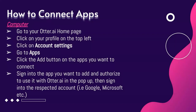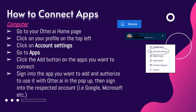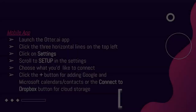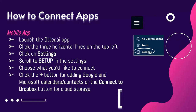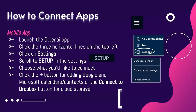So how do you connect? Go to the Otter AI homepage, then click on your profile in the top left. By clicking on account settings, you would press the add button to the apps you want to connect. You can sign into the app and authorize it with Otter AI in the popup and sign into your respective accounts. On mobile, you can launch the Otter AI app, click the three horizontal lines on the top left, press settings, click setup in the settings, choose what you'd like to connect, and then click the plus button for adding things like Google Calendars or connect to Dropbox.